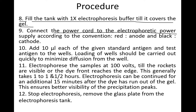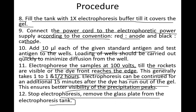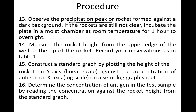Connect the power cord to the electrophoretic power supply according to convention — red is the anode, black is the cathode. Before starting electrophoresis, add 10 microliters each of the given standard antigens as well as the unknown concentration antigens into the wells. Start electrophoresis at 100 volts until the rockets are visible or the dye front reaches the edge, which generally takes one to one and a half hours. Electrophoresis can be continued for an additional 15 minutes after the dye has run out to ensure better visibility.